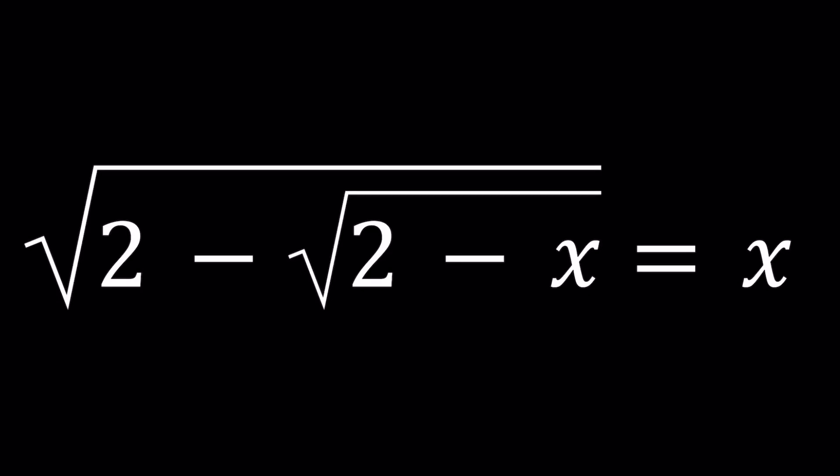Hello everyone. In this video we're going to be solving a nice radical equation. We have the square root of 2 minus the square root of 2 minus x equals x and we're going to be solving for x values. I'm going to show you three different methods. Hopefully you like them. Please let me know what you think and if you know of any other method that could be applied, please let us know in the comment section down below. So let's start with the first method.